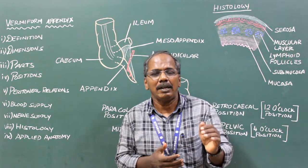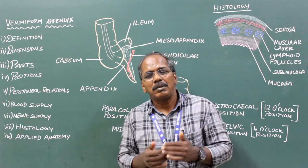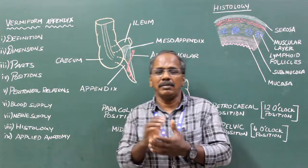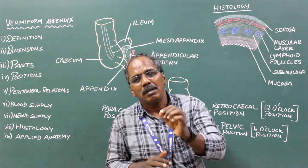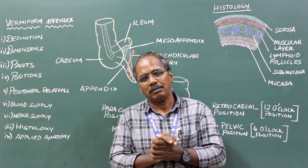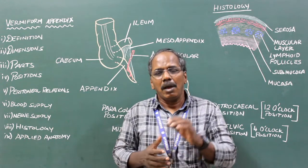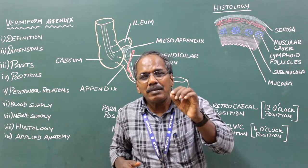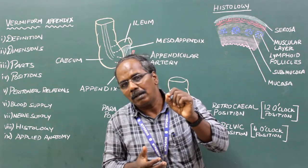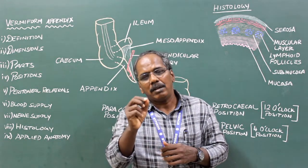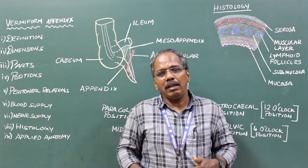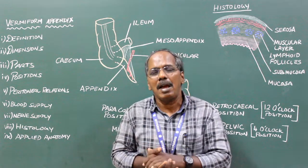The pain is later localized to the right iliac fossa, due to the involvement of the parietal peritoneum present in the right iliac fossa. On palpation, maximum tenderness is elicited over McBurney's point, which is the point at the junction of the medial two-thirds and lateral one-third of a line connecting the umbilicus and the anterior superior iliac spine.